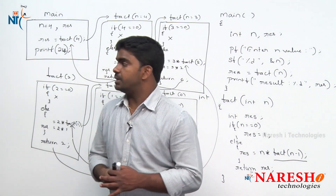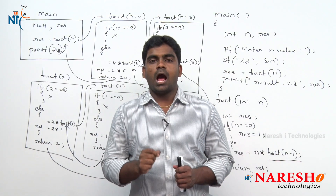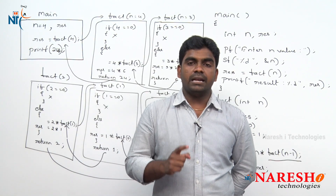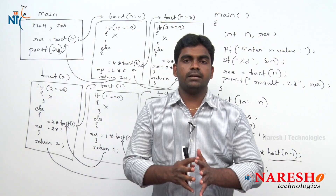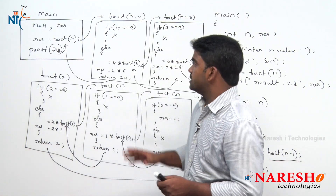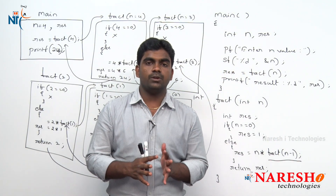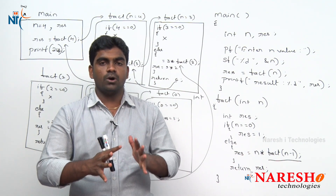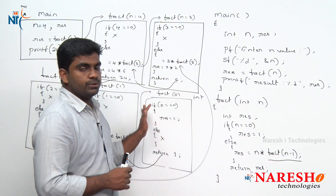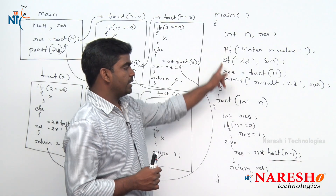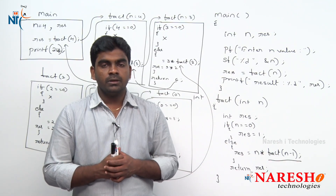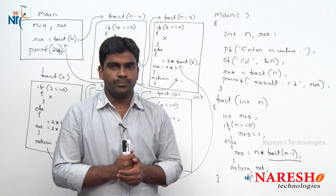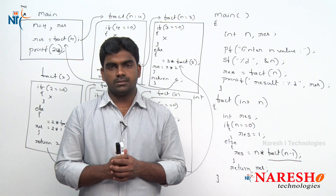In recursive function execution, understanding method spaces is very important — how the control moves in a forward direction and how it comes back. You should understand every method space and write it out to understand the exact execution flow of a recursive function. This is completely about how a recursive function executes in C language — and in any programming language, a function calling itself is called a recursive function. The best example is factorial of a given number. For more examples, log into the Naresh IT channel. Thank you all.